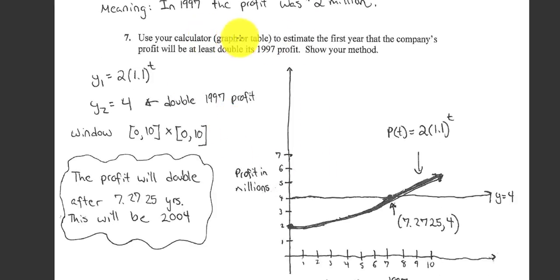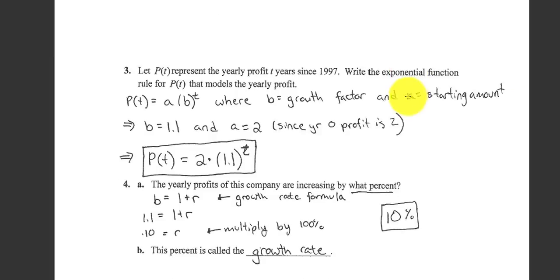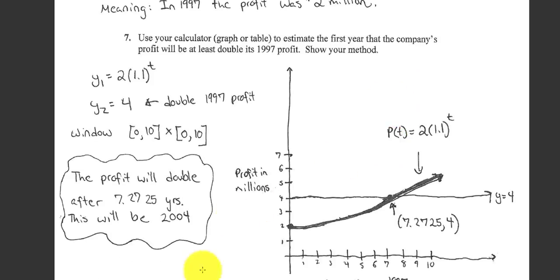Lastly, it says use your calculator, graph or table, to estimate when the profit will double. So remember, our initial profit was 2 million. So double 2 million would be 4 million. Four years later, we're only at 2.9. So to get from 2 to 4, I'm assuming we're going to go out to like 6, 7, 8, something like that. So the easiest way to handle this problem would be to graph it.